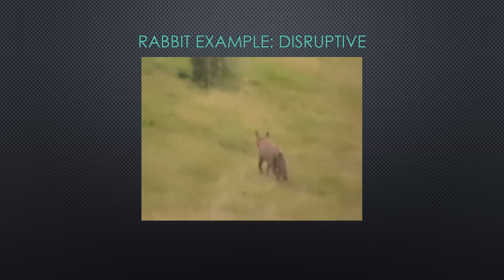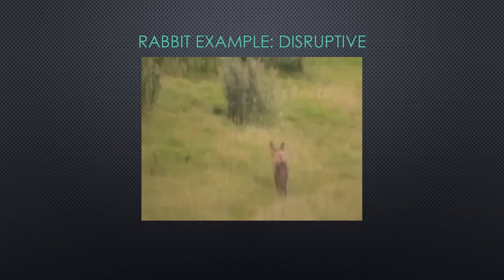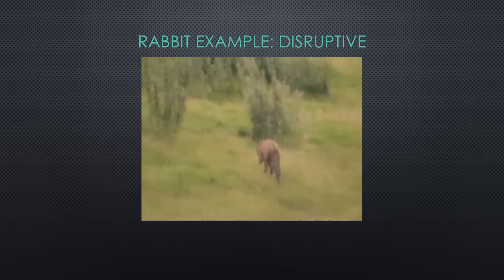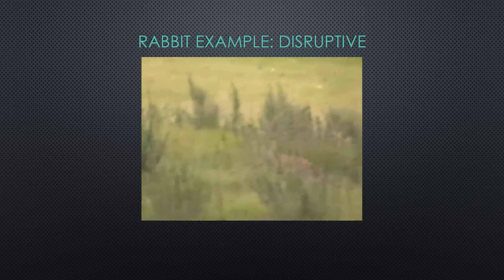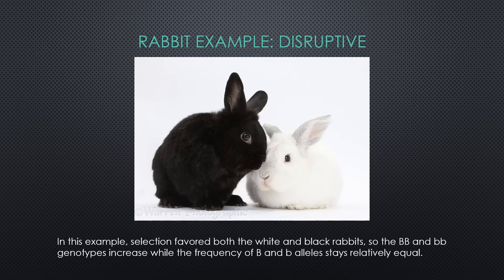During the summer, a new species of fox migrates to the area where rabbits live and only hunts gray rabbits. This results in disruptive selection favoring the big B big B black rabbits and little b little b white rabbits. This increases the big B big B and little b little b genotypes, but allele frequency remains equal.